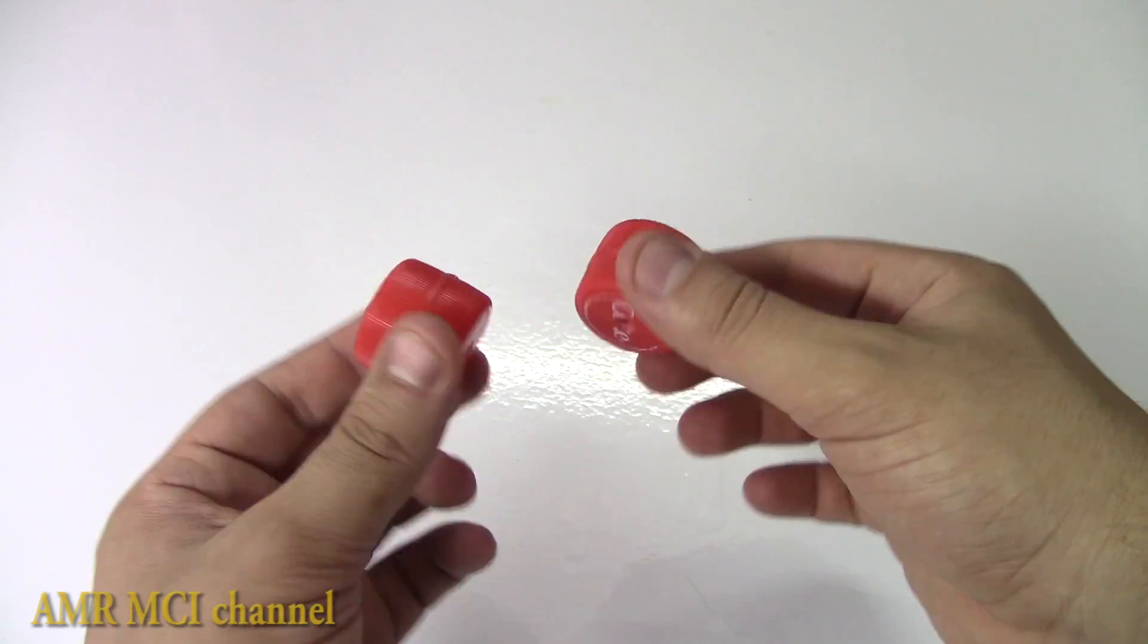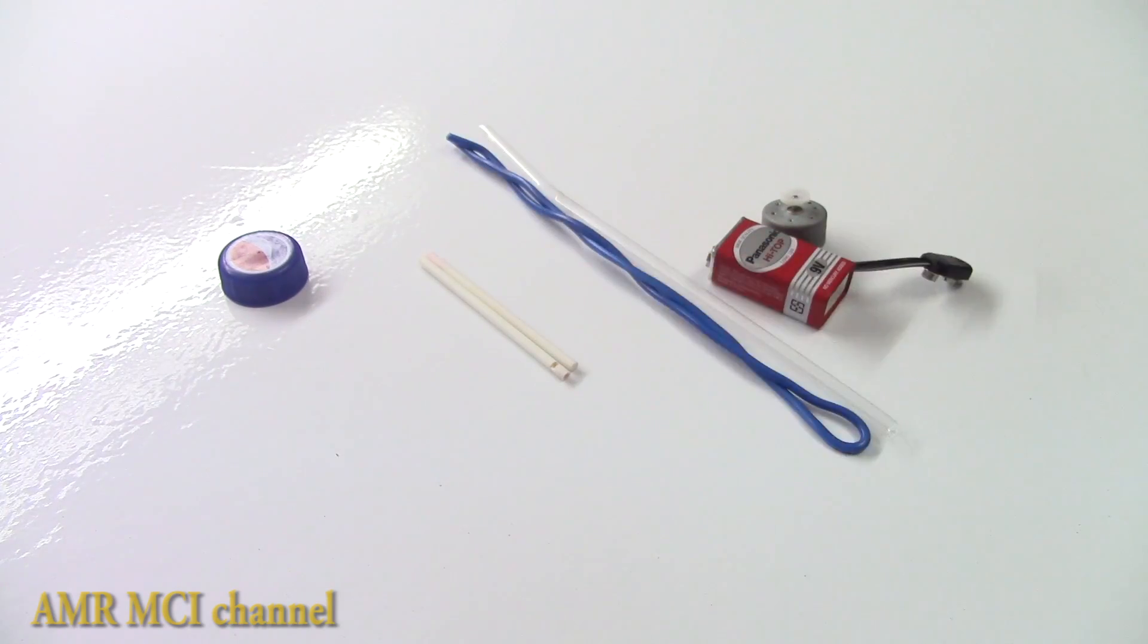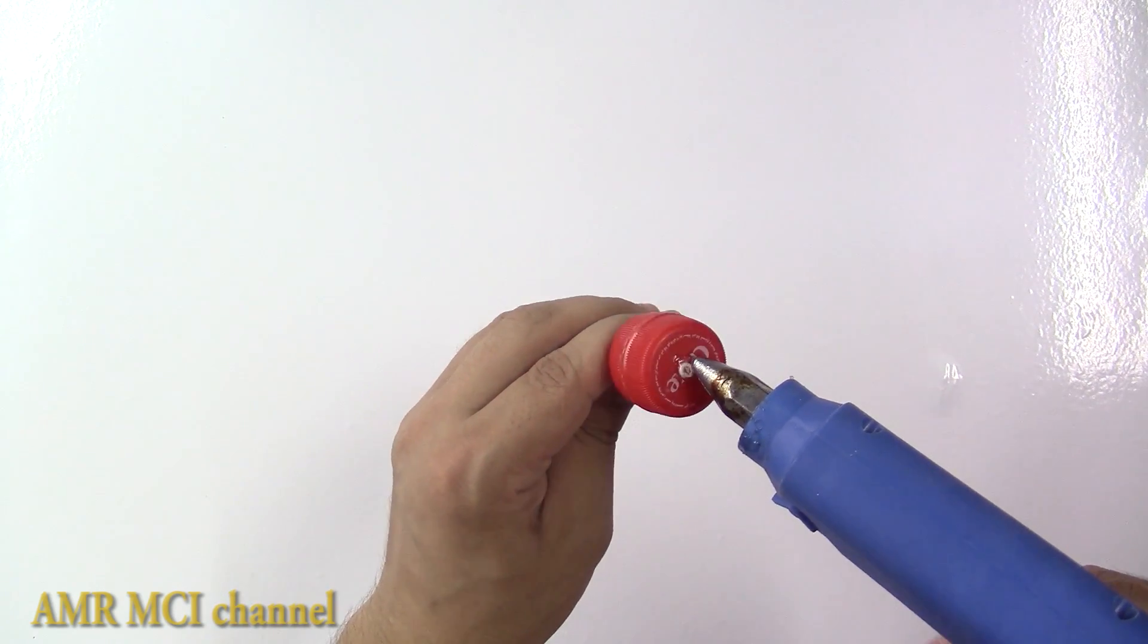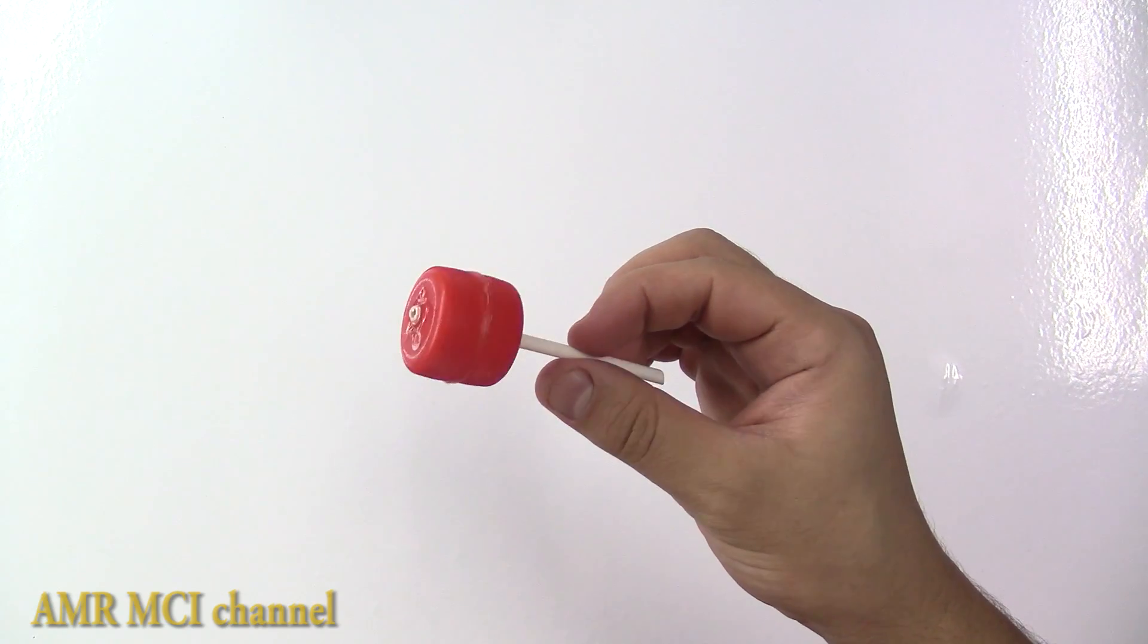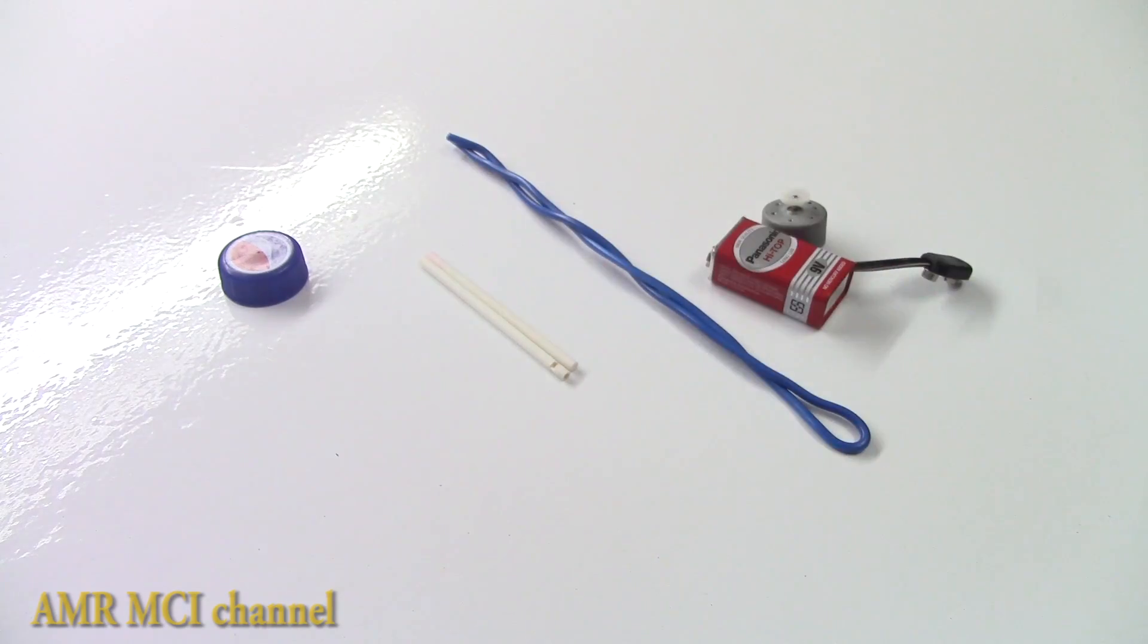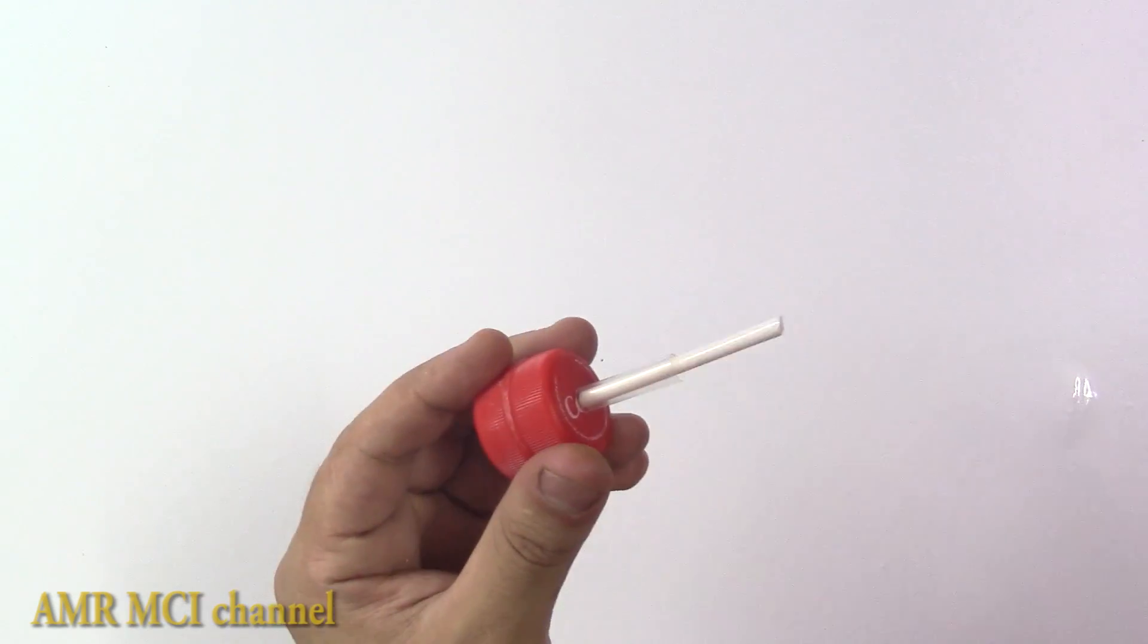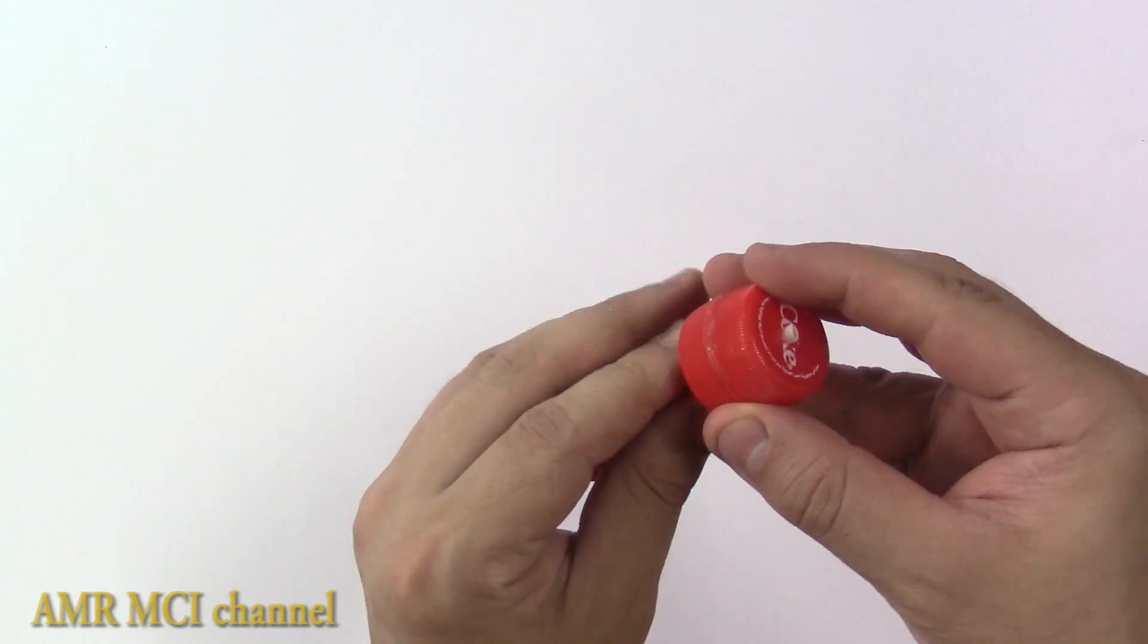Next, take one lollipop stick and pass it through one wheel, then glue it in place. Now take a drinking straw and cut a 3 cm piece. Slide the straw onto the stick, then put the other wheel on and glue it in place.